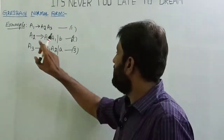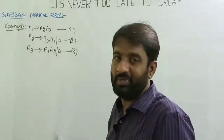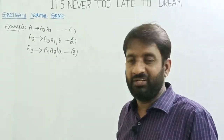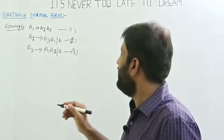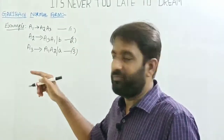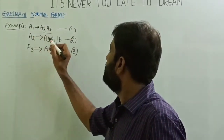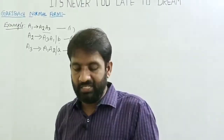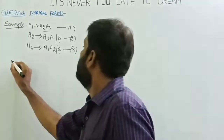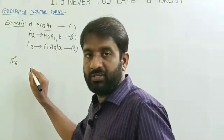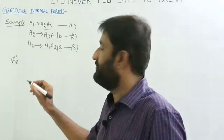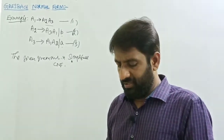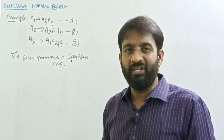A3 derives 'a', A2 derives 'b', so A1 also derives 'a' and 'b'. A2 and A3 are reachable from A1. So the given grammar is in simplified form and already in CNF. Now convert this grammar into the Greibach Normal Form. We need to rename the variables — the variables are already A1, A2, A3, so no renaming is needed.